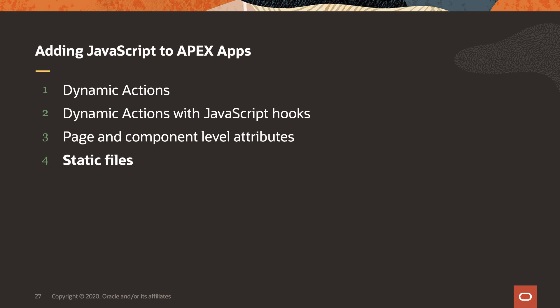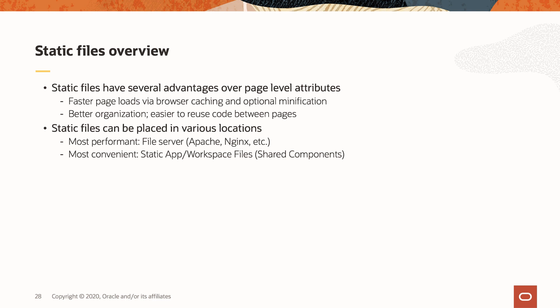Let's talk about static files. Static files have several advantages over the page-level attributes. Faster page loads could be one — if you're adding a lot of JavaScript code to page-level attributes, that code must be transferred from the server to the browser every single time the page loads. However, if you move that code to a file and link to it, you can take advantage of browser caching so you only have to send the file once. You could even optionally minify that file to send less data across the wire. Of course, you'd have to have a lot of JavaScript code before you start to see those advantages. Perhaps a better reason to move to static files has to do with sharing code between pages — using page-level attributes, you'd have to copy and paste the code and maintain it in separate locations, whereas a static file only needs to be maintained in a single place.